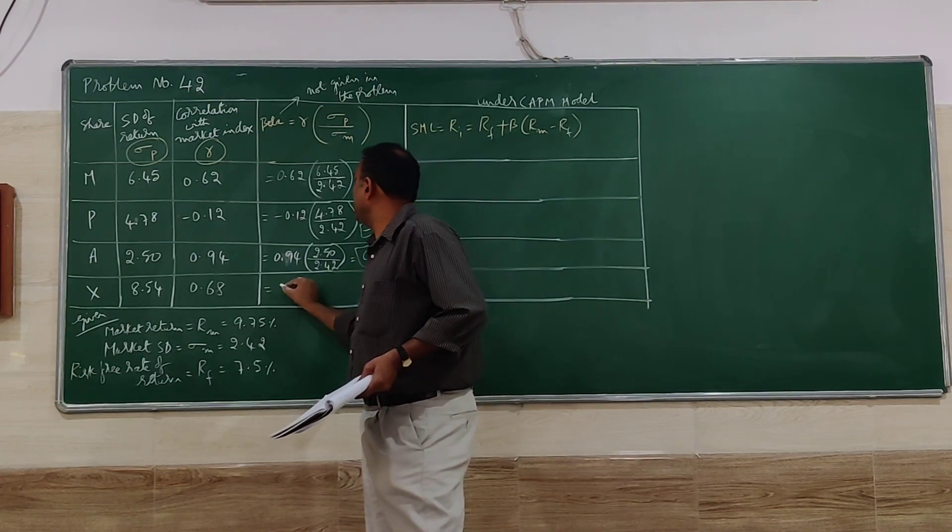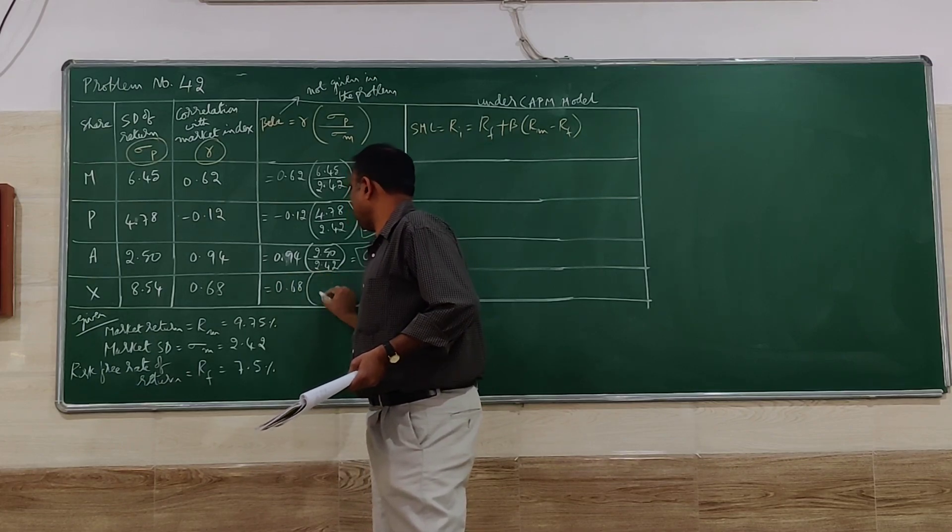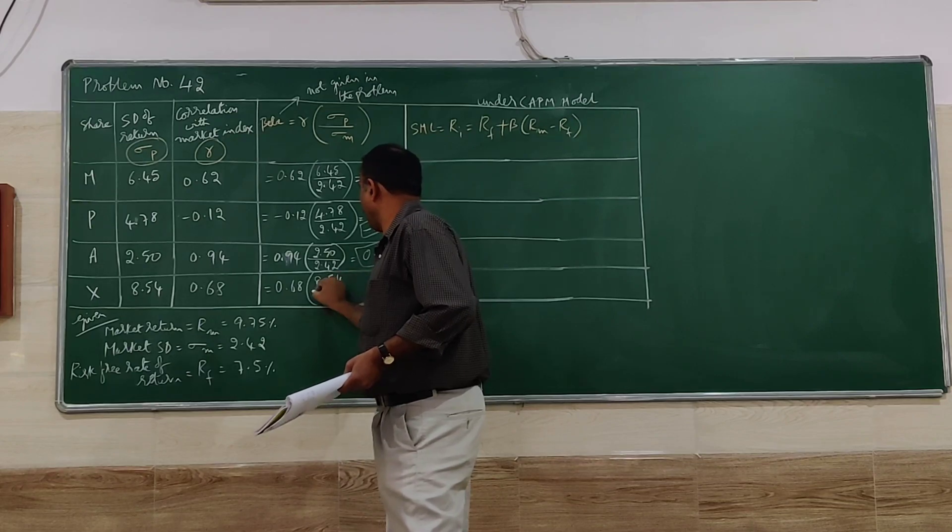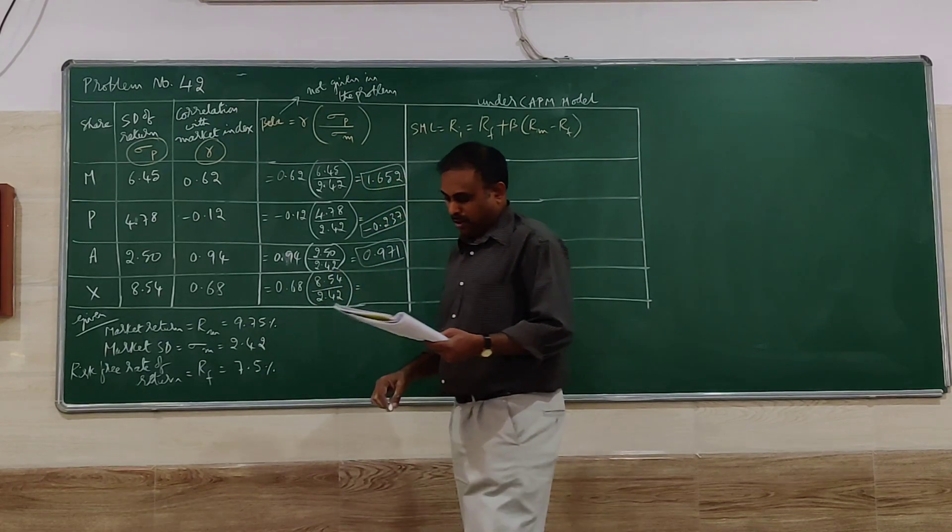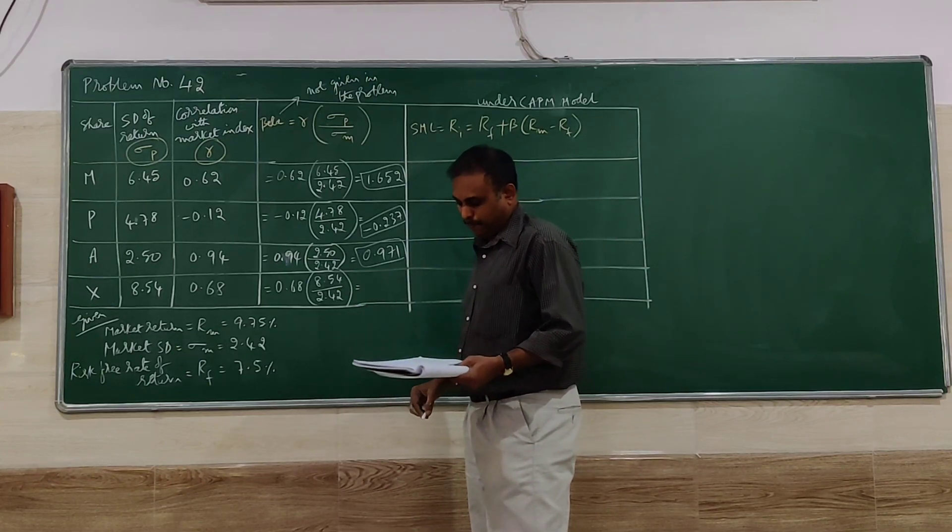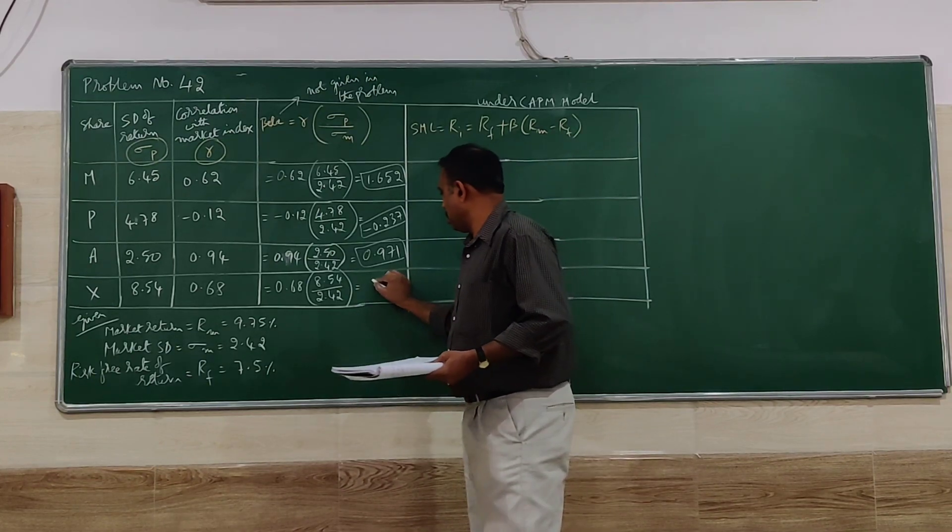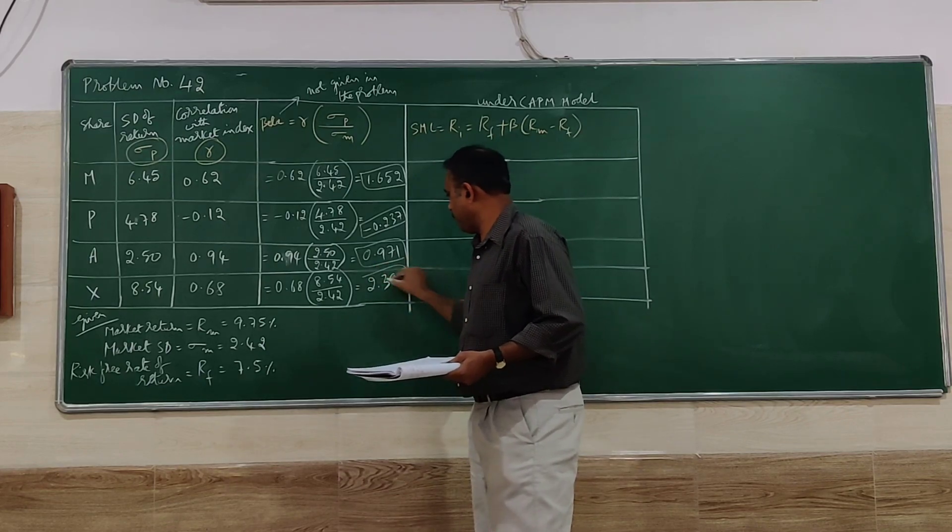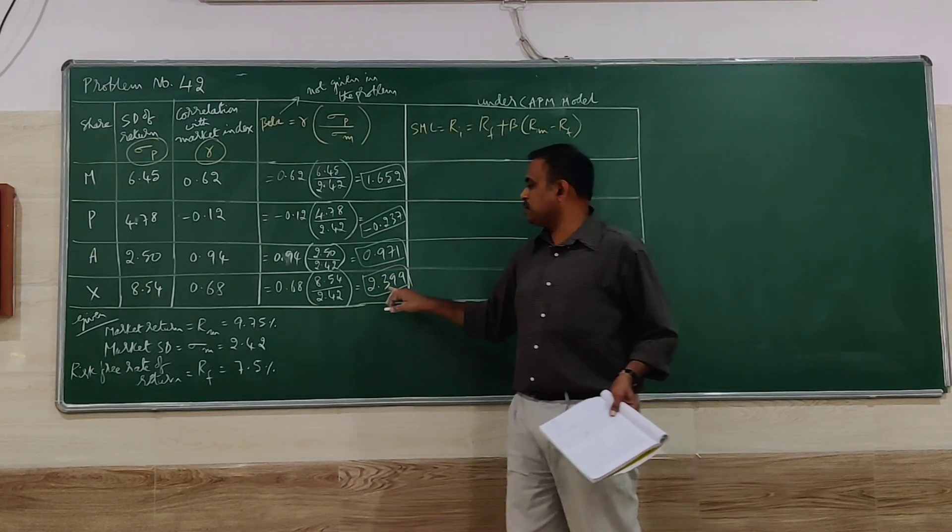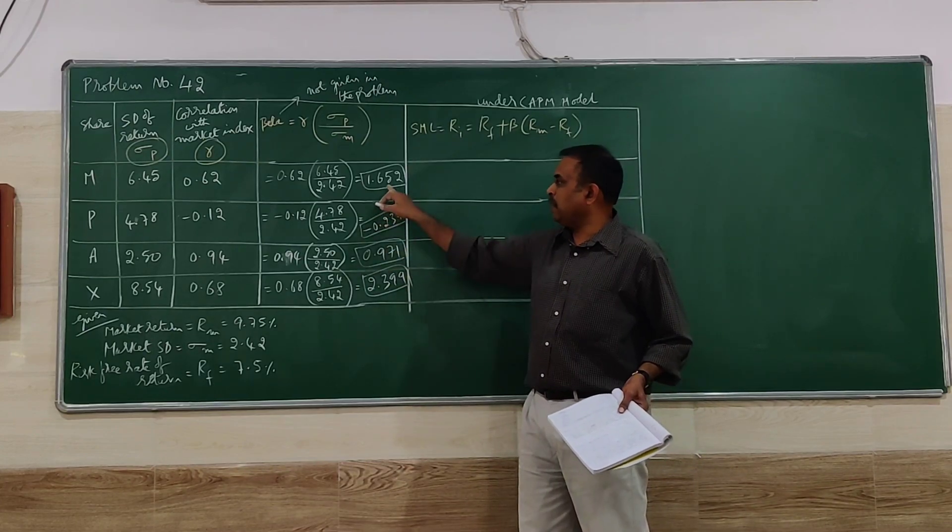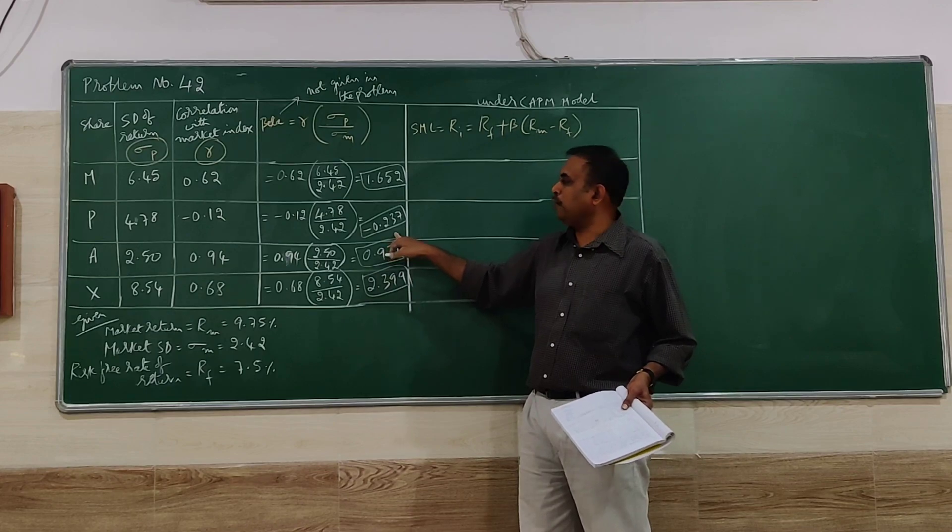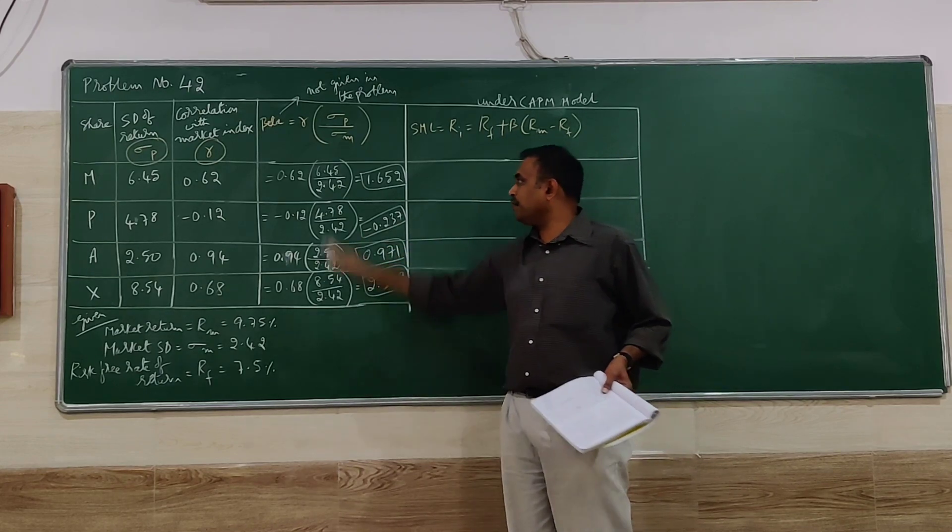And the last one: 0.68 into 8.54 divided by 2.42. The beta value here will be 2.399. So beta is more for X, then for M, then for A, and the minus value for P.